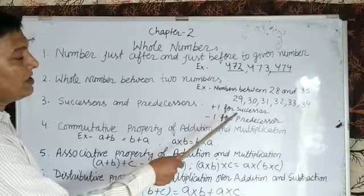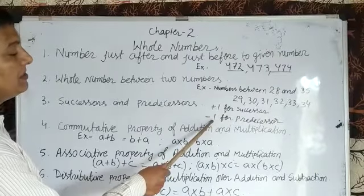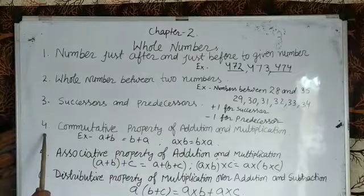For finding successors we add one to the given number, and for predecessors we subtract one from the given number. The fourth concept is commutative property of addition and multiplication.